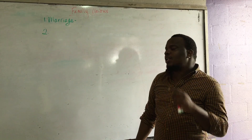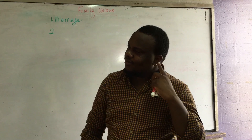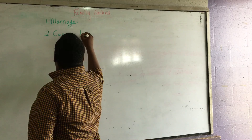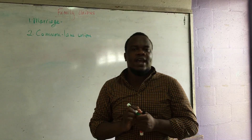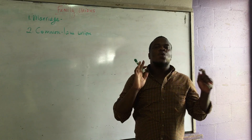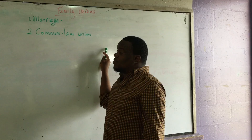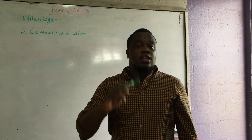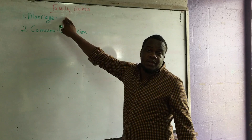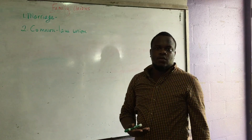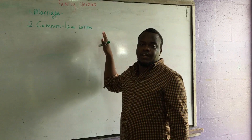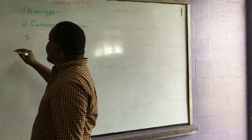The next type of family union is also very popular in the Caribbean. That is the common law union. This is when a man and a woman live together for five years or more and they are not married. That is called a common law union. This union is also recognized by law in Jamaica. Many persons, especially some males, believe they shouldn't get married because they don't want certain responsibilities. However, the government, many years ago in Jamaica, passed a law that recognizes the common law union.